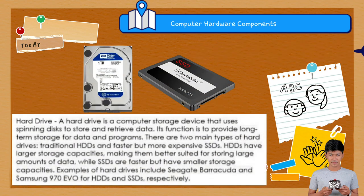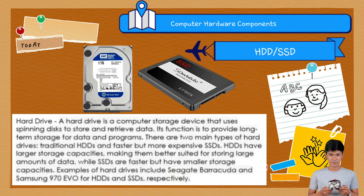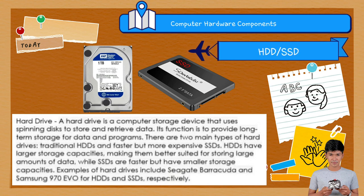Next, the hard drive or solid state drive (SSD). A hard drive is a computer storage device that uses spinning disks to store and retrieve data. Its function is to provide long-term storage for data and programs. There are two main types: traditional HDDs and faster but more expensive SSDs. HDDs have larger storage capacities, making them better suited for storing large amounts of data, while SSDs are faster but have smaller storage capacities. Examples include Seagate Barracuda for HDDs and Samsung 970 EVO for SSDs. In other words, the hard drive or SSD is like a gigantic storage room — it holds all your files, programs, and digital treasures, where you can save your photos, videos, and games to enjoy later.